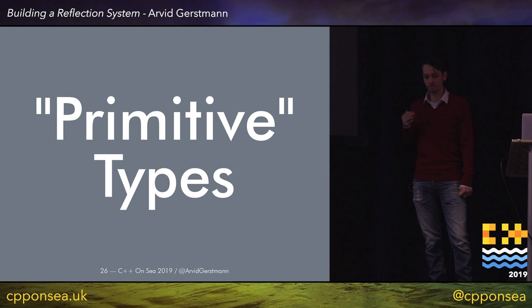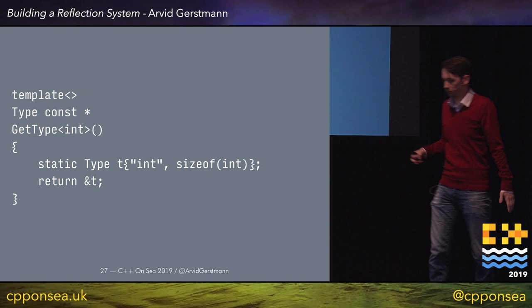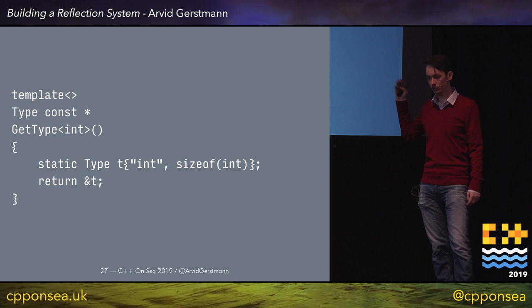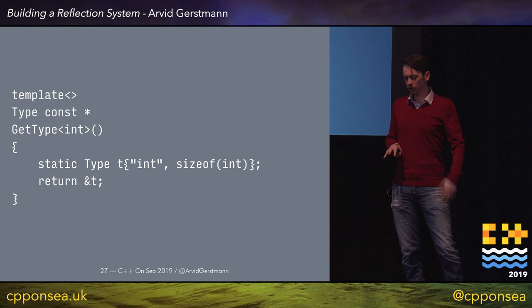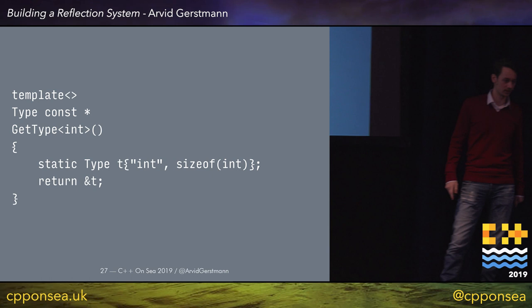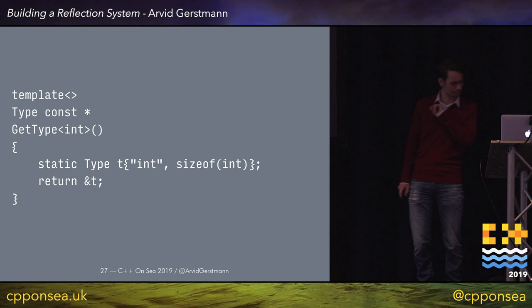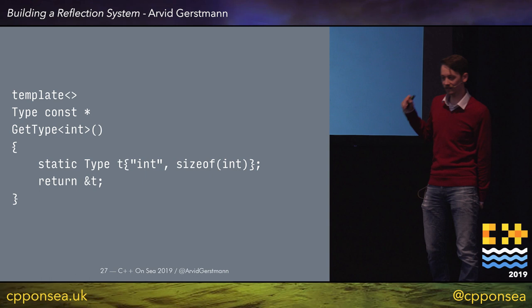Here we have a get_type implementation for int. It's super simple — we create a static function-local of Type, initialize it with the name "int" and size sizeof(int), and return a pointer to it. We need to do that for float, char, long, and all the types which are there by default. Unfortunately the reality is more complicated: if we try to write get_type for std::vector<T>, it doesn't work — we can't partially specialize a function template.